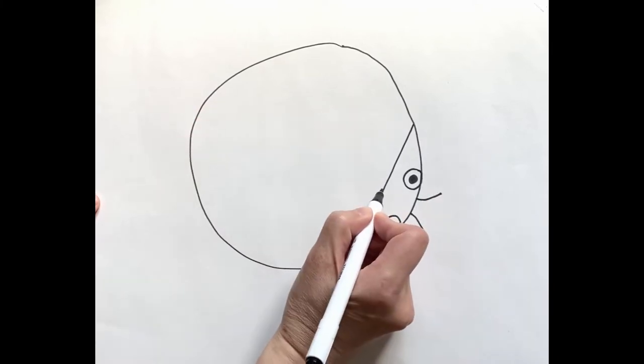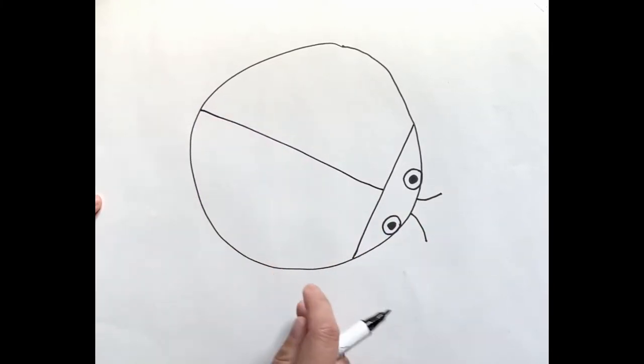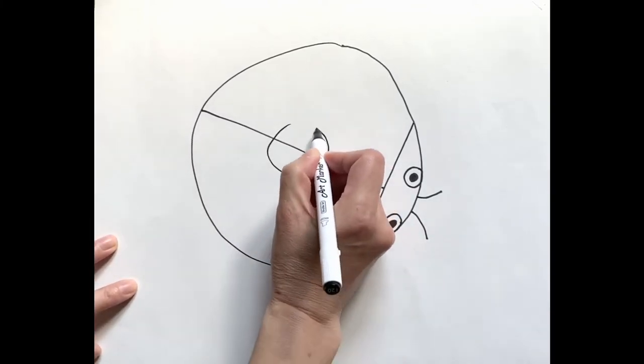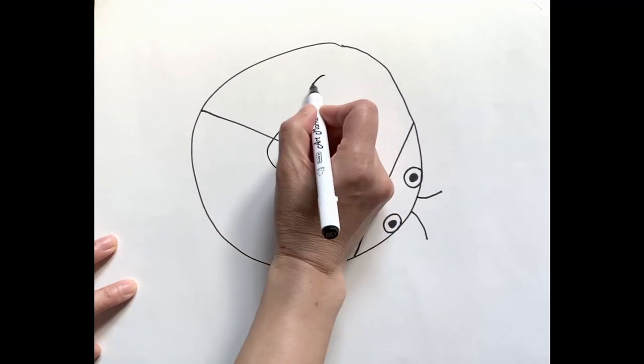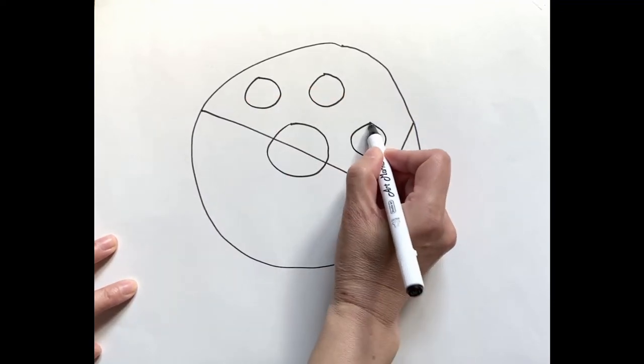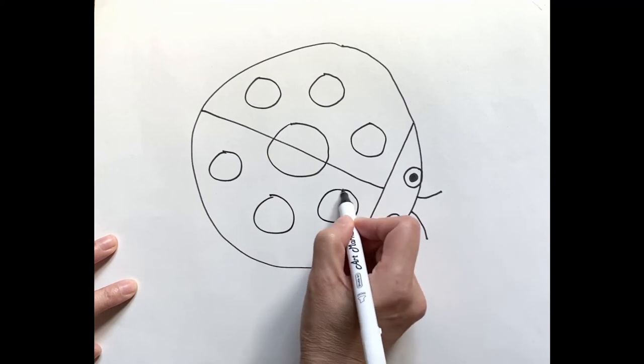Let's draw a line in the middle of the circle, then polka dots.